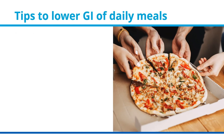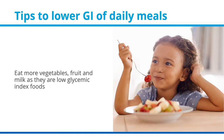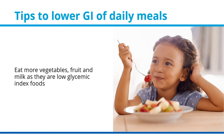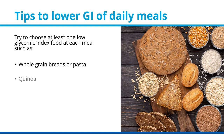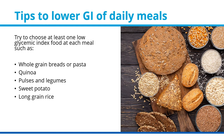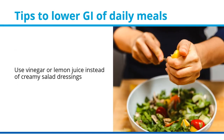Tips to lower the GI of daily meals: limit processed foods and eat more vegetables, fruit, and milk, as they are low GI foods. Try to choose at least one low GI food at each meal, such as whole grain breads or pasta, quinoa, pulses and legumes, sweet potato, or long grain rice. Make fruit and milk a part of your meal, and use vinegar or lemon juice instead of creamy salad dressings.